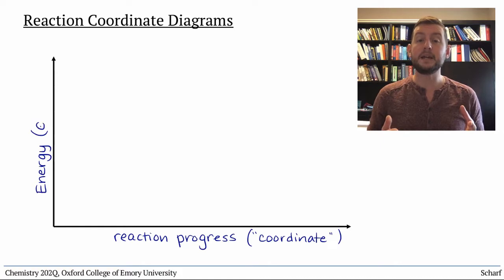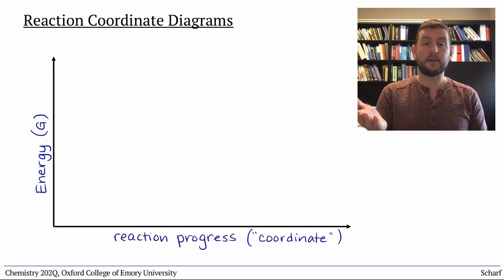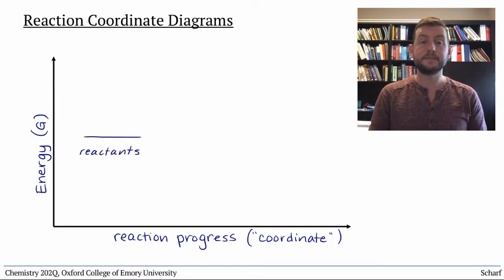Usually, we mean Gibbs free energy. On the left side of a reaction coordinate diagram are reactant molecules, or starting materials, which have some combined total energy.